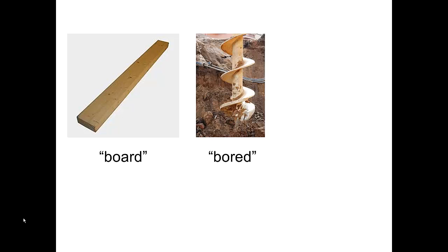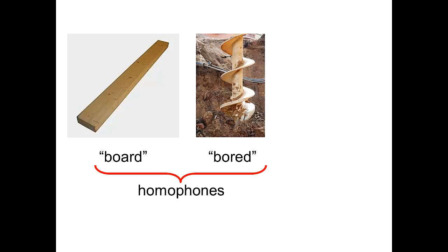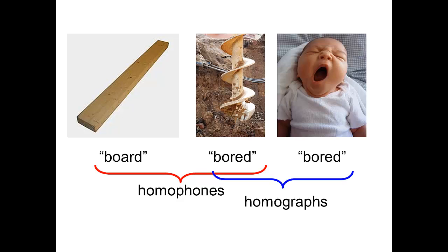There are different types of homonymy. Here we have a board, but we can also drill into the ground and talk about how we bore into the earth. These two identically sounding words have completely different meanings, and they also have different spellings — they are called homophones. We might also have a situation where two words are spelled the same and sound the same, but have completely different meanings. These words are called homographs. These are two subcategories of homonyms.